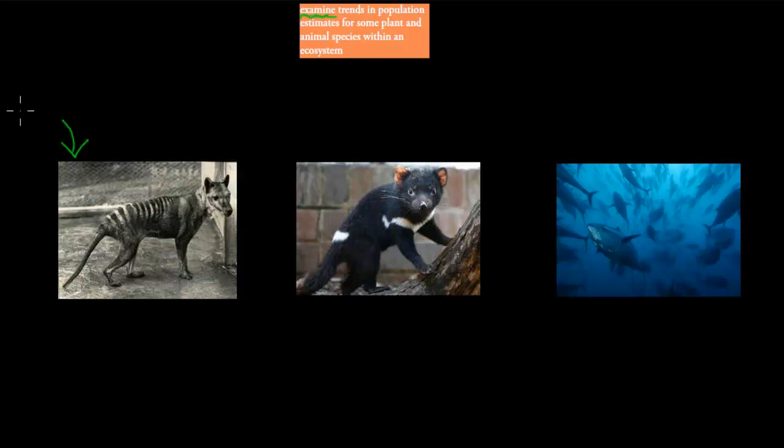The first one is the Tasmanian tiger. And the picture is actually in black and white. And the reason why is because it's basically extinct. We haven't seen any members of this species for a long time. And if you look at the actual trends, you've seen a decent high number. So this is the graph. Numbers on here.